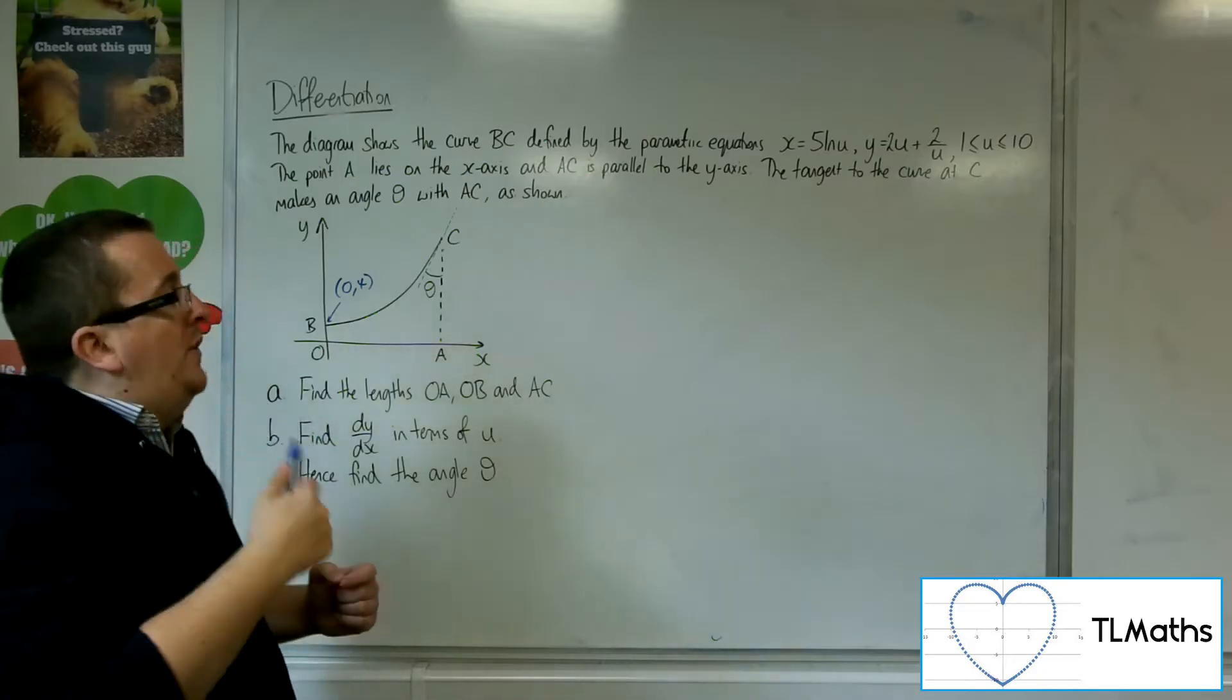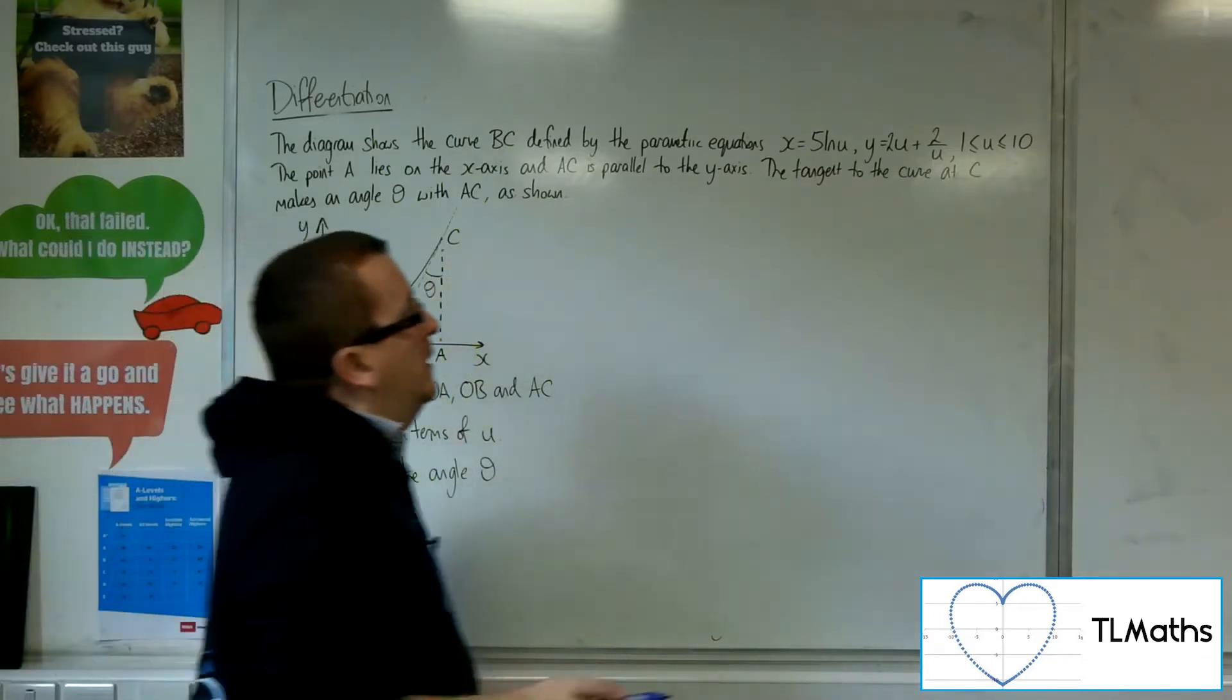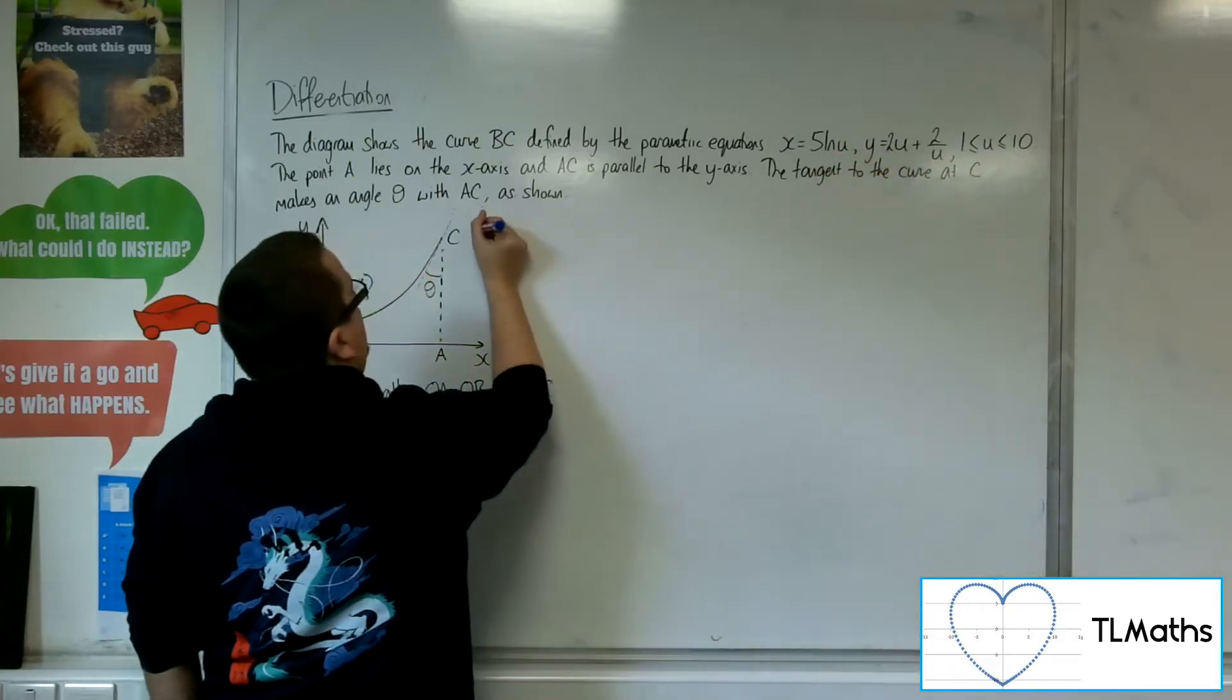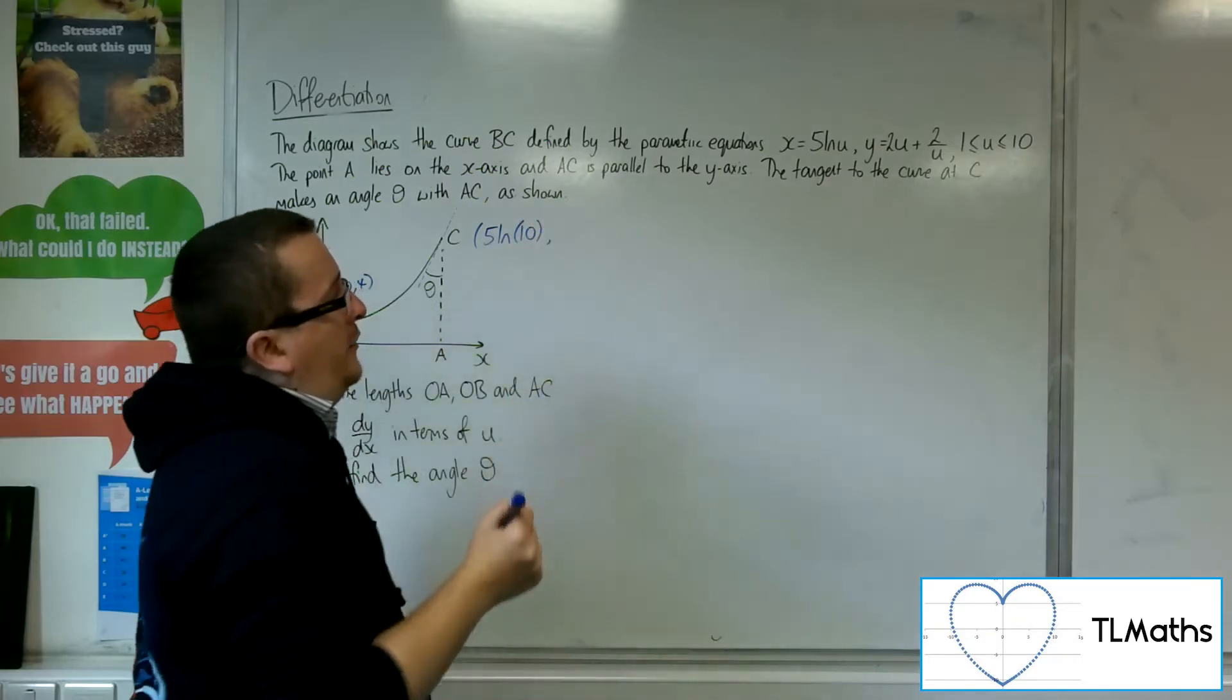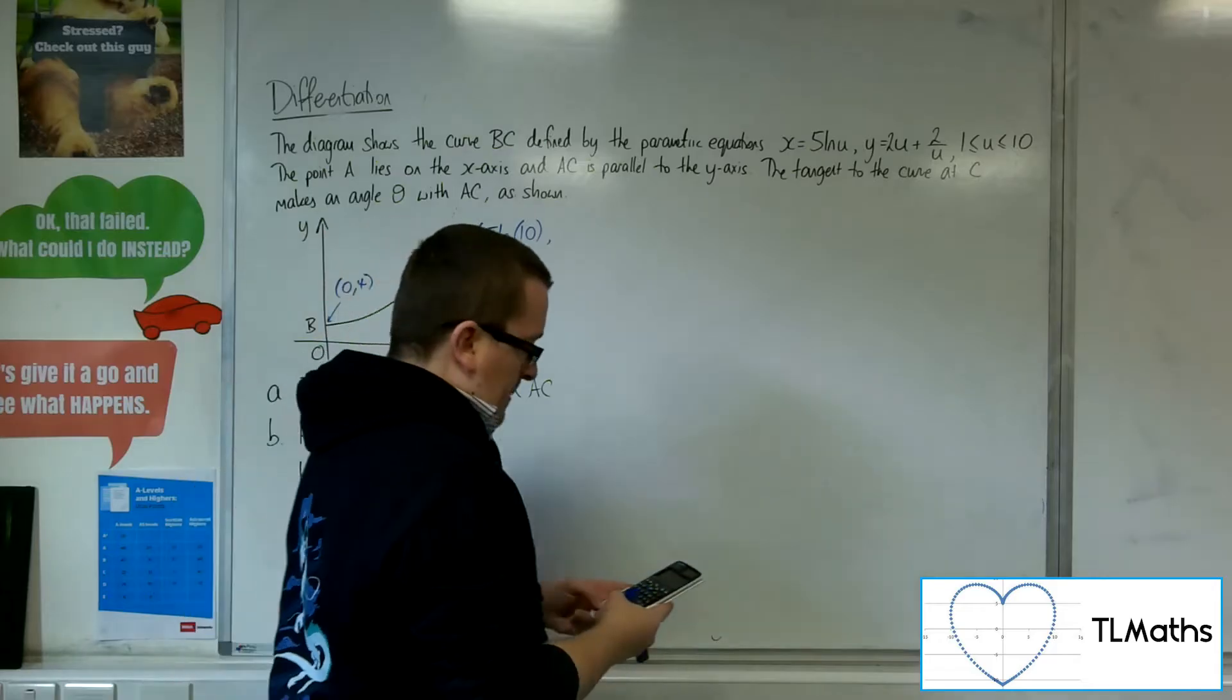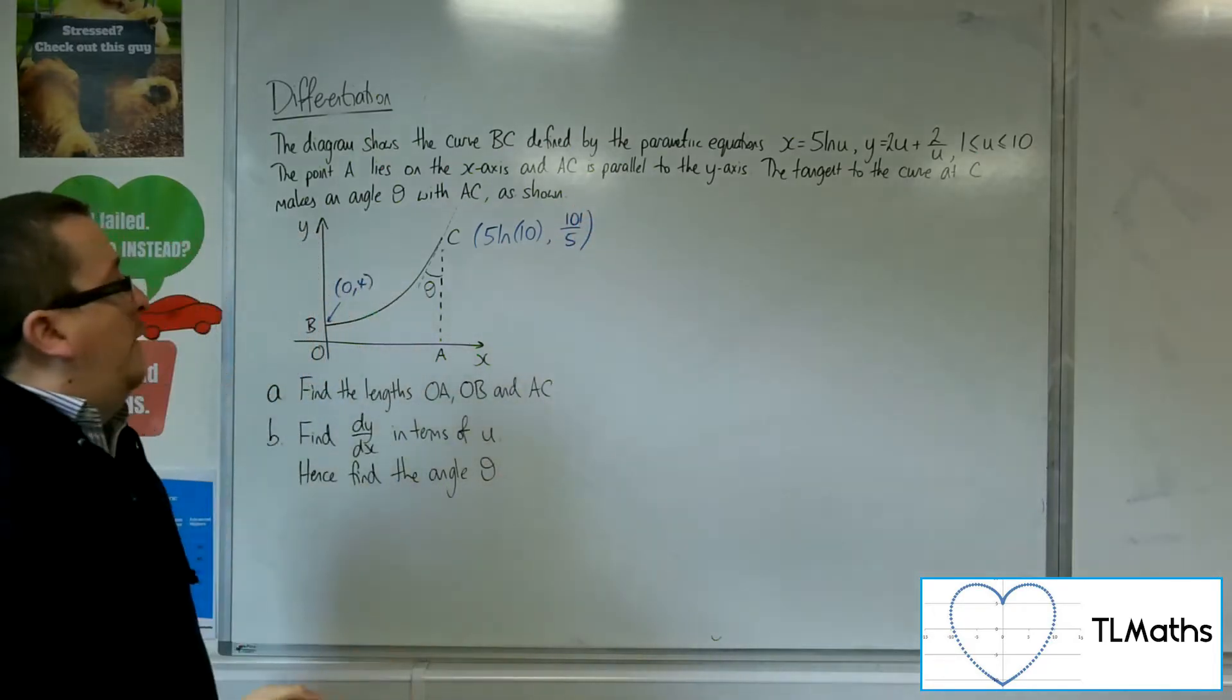So as u is increasing, you might assume that we're going to be travelling along this curve. So by the time we get to u equals 10, we should be at this far point at C. So when u equals 10, we should have 5 log 10 as the x coordinate. And the y coordinate will be 2 lots of 10 plus 2 over 10, so 2 times 10 plus 2 over 10, which is 101 over 5. And that will be the coordinates of C.